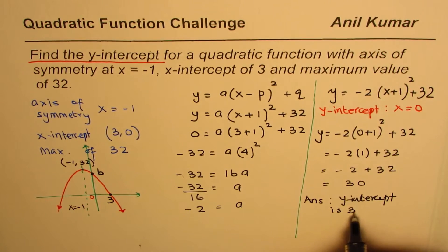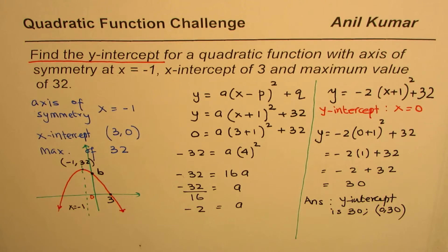And therefore our answer is y-intercept is 30. As far as the coordinate points are concerned, you could also write this as (0, 30). So that is how you can actually solve such a question.